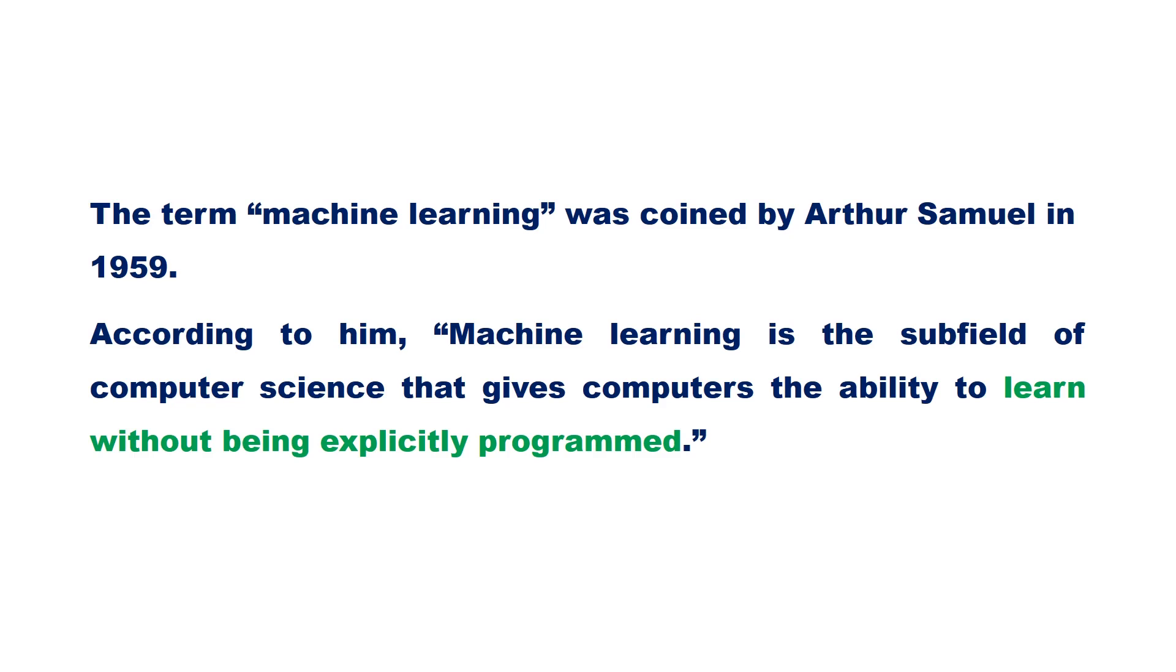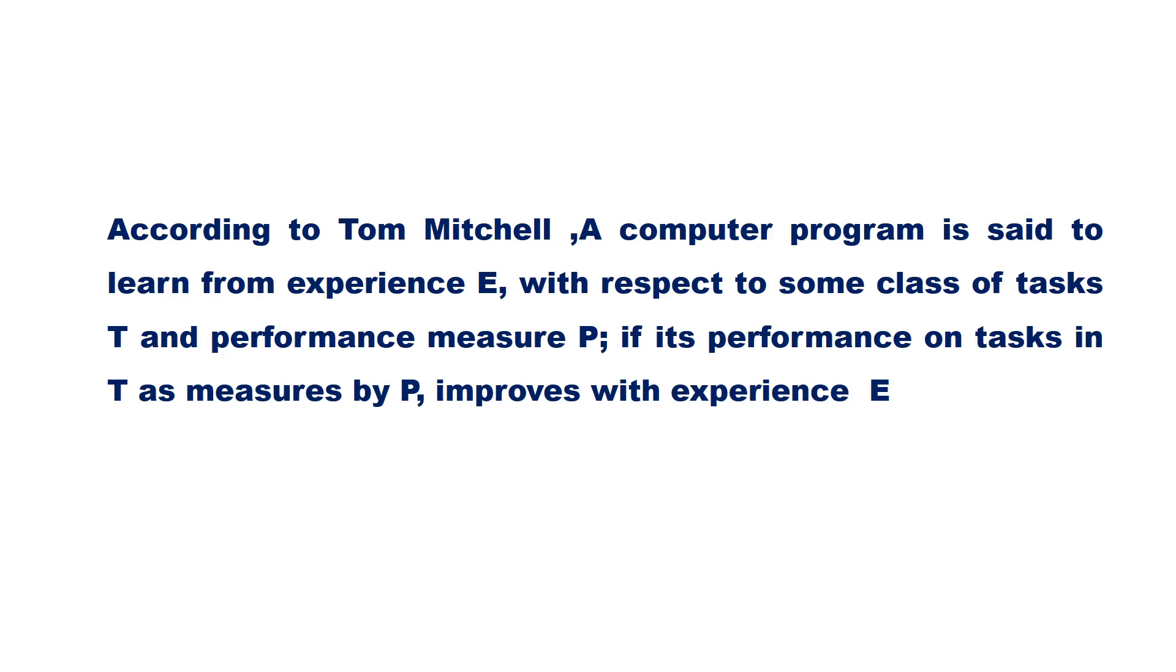According to Tom Mitchell, a computer program is said to learn from experience E with respect to some class of task T and performance measure P, if its performance on task in T as measured by P improves with experience E. According to this definition, learning comprises of three components: experience, task, and performance.